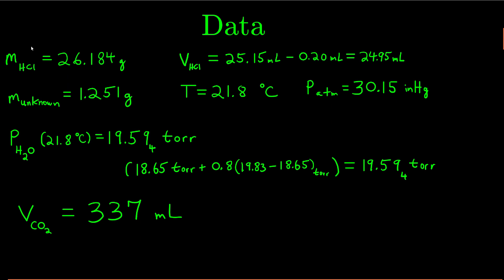The idea in this lab is that you reacted hydrochloric acid with your unknown carbonate. The carbon dioxide gas that is produced is produced in a one-to-one mole ratio with your unknown. Your ultimate goal is to calculate the molar mass of your unknown carbonate, which means you need to know the grams and the moles. You divide the two, you get the molar mass. The grams part's easy — you weigh it. This whole lab is really about getting the moles of carbon dioxide gas.